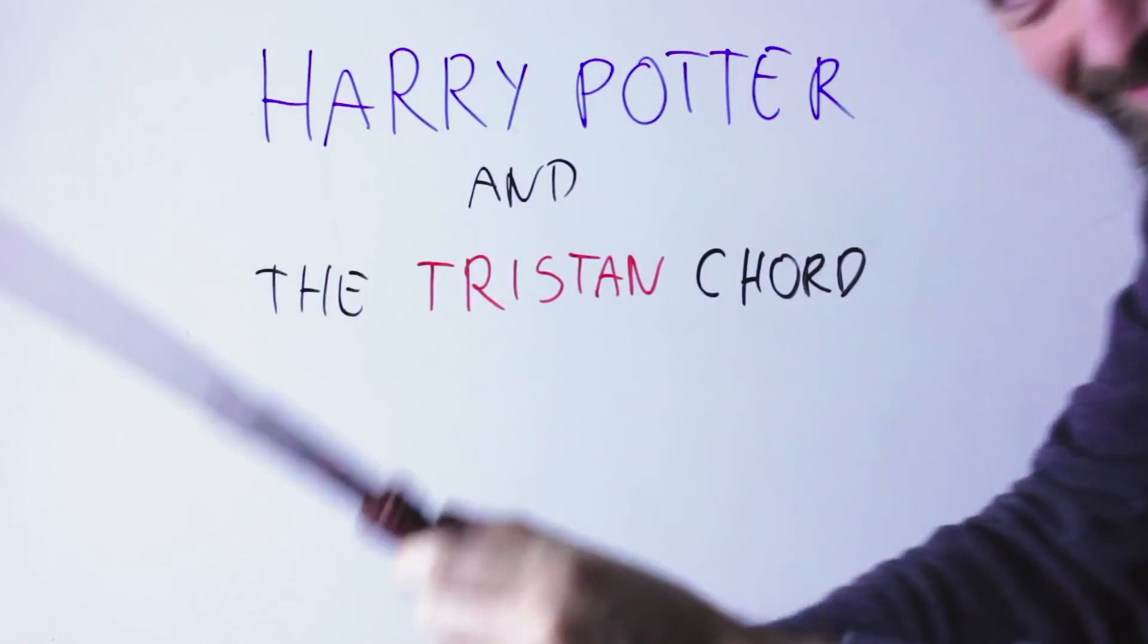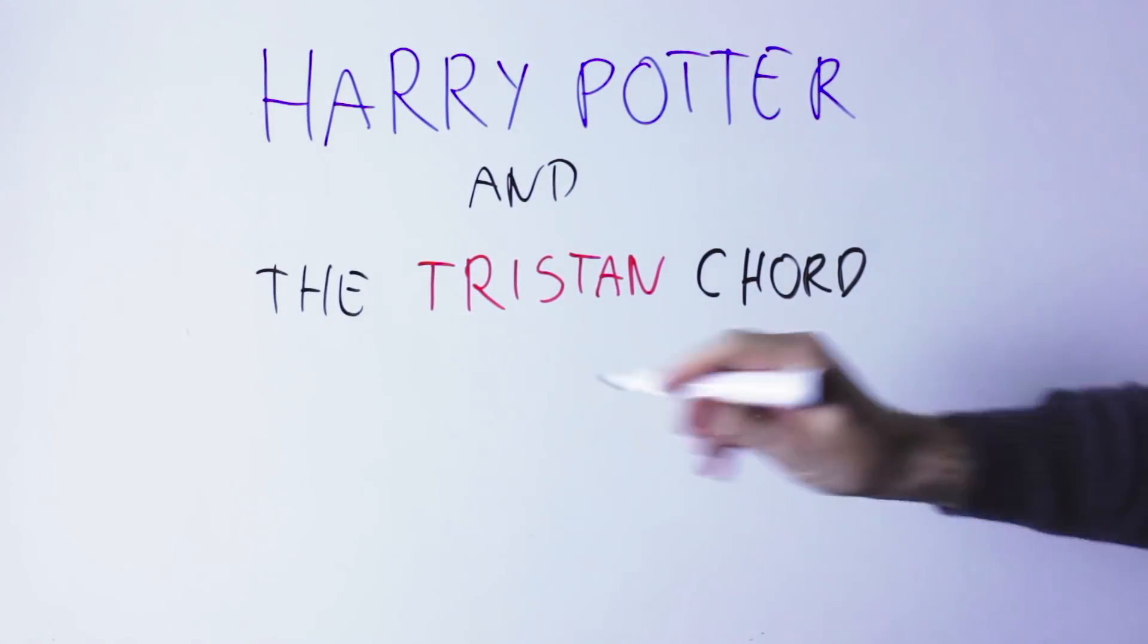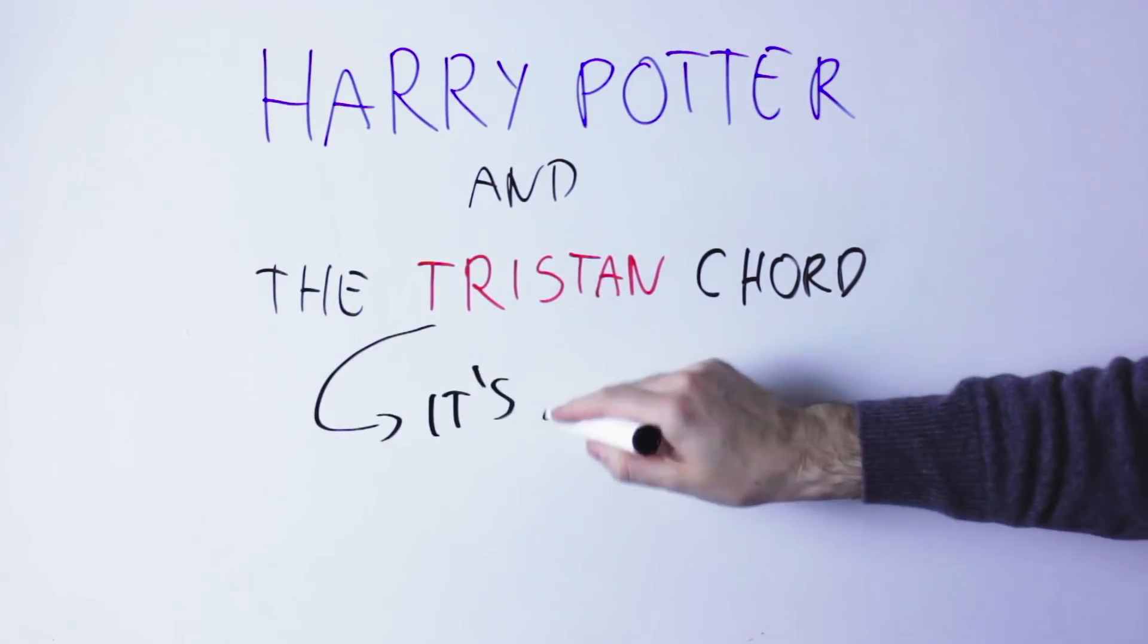Hello Internet! So magical to see you! The Tristan Chord is a chord used by Wagner in the opening theme of his opera Tristan und Isolde.